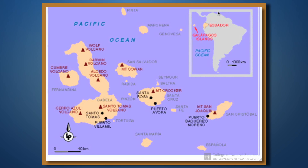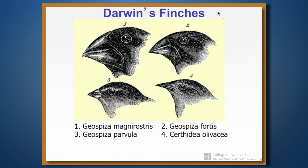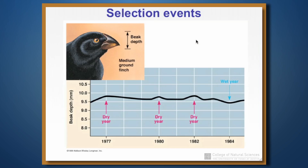The second example is from the Galapagos Islands, where Darwin first had his thoughts about how biogeography could relate to natural selection and evolution. There has been considerable work done on evolution in these finches. In particular, one of four major finches, Geospiza fortis, has undergone selection for beak depth — the height of the beak from top to bottom. There are periodic droughts during El Niño years on the Galapagos Islands, and during those dry years there is very strong selection for increased beak depth.